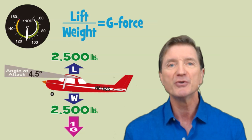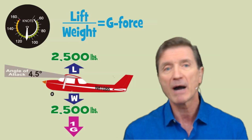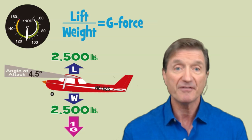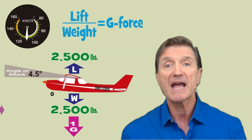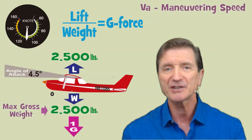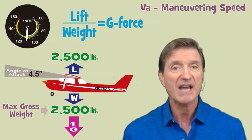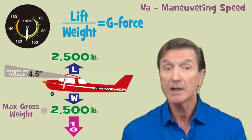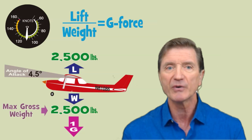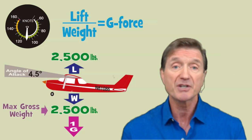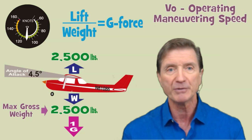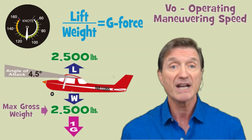The airplane's posted maneuvering speed, VA, is based on the airplane being at max gross weight. Maneuvering speed is technically only applicable to the airplane when it's at max gross weight. When the airplane operates at less than gross weight, its maneuvering speed decreases and is given a new name called operational maneuvering speed, or operating maneuvering speed, otherwise symbolized as VO.